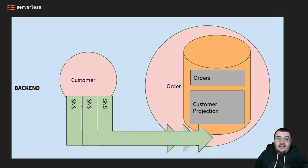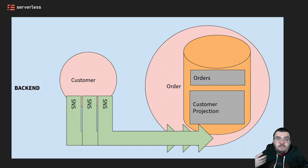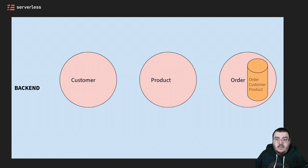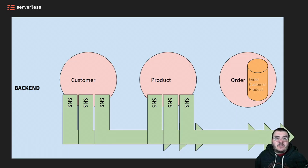The advantage this gives us is that even if the customer service goes down, the order service can continue to still fulfill requests for orders. It might not be able to create new orders for brand new customers, since those new customers may not have propagated through yet, but by and large the order service can continue. This isn't just limited to the customer service — our order service can maintain state for multiple other services. So our order service has state for orders, customers, and products. Both the customer service and the product service can propagate out events when state changes, and the order service can maintain that state itself.